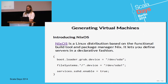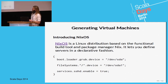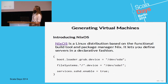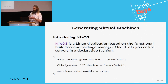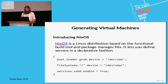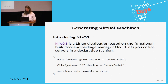NixOS is a Linux distribution that uses the Nix build tool to build configurations. Just these three lines define a complete server: specifying the Grub bootloader on the first disk, mounting the first partition as root, and enabling an SSH server. From this, NixOS can build a complete installation of the Linux distribution and activate it on your computer or build a virtual machine out of it — a perfect, completely declarative way of building virtual machines.